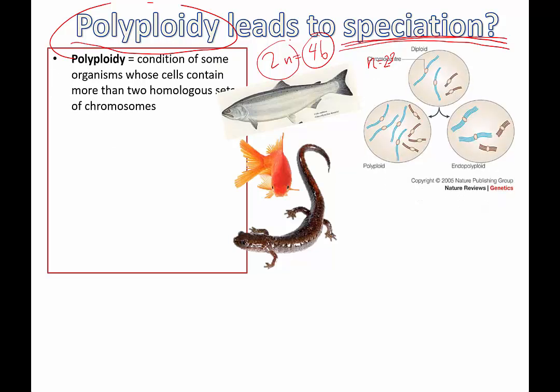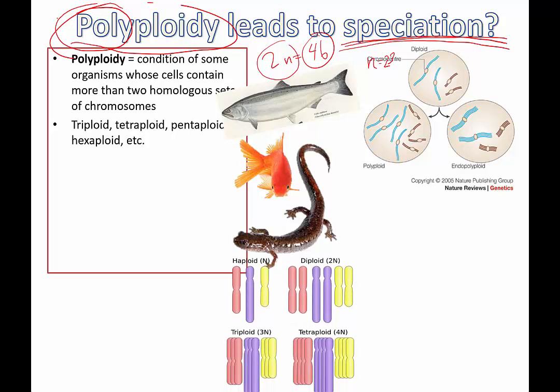Looking at the prefix — which is useful for all kinds of biological terms — if we put the prefix 'poly' into 'ploidy', we end up with the condition where organisms contain more than two homologous sets of chromosomes. This can happen in lots of different types of organisms, including the ones pictured here.